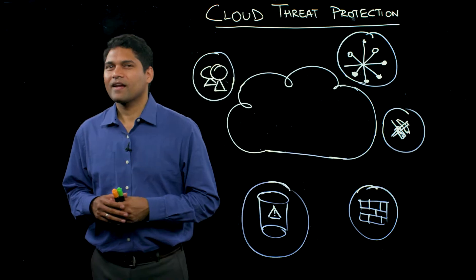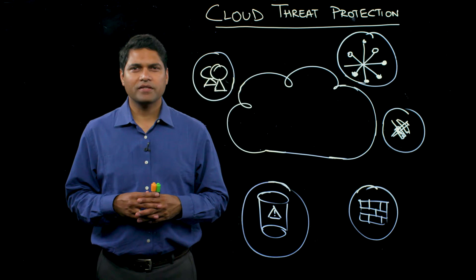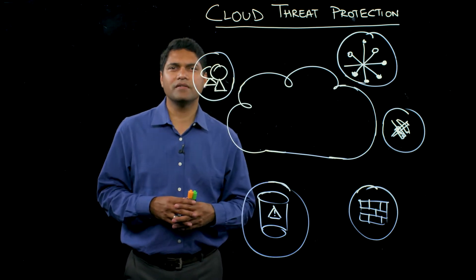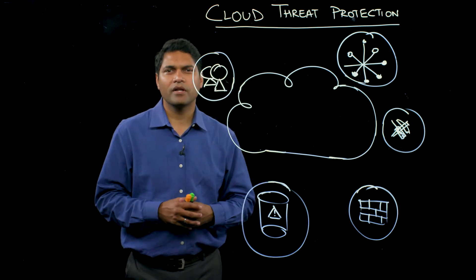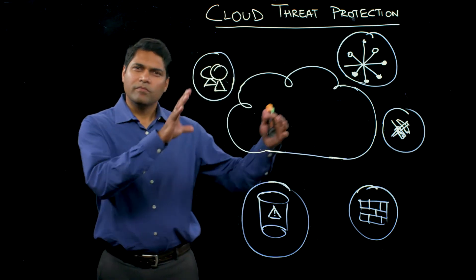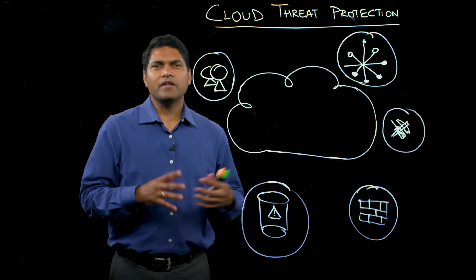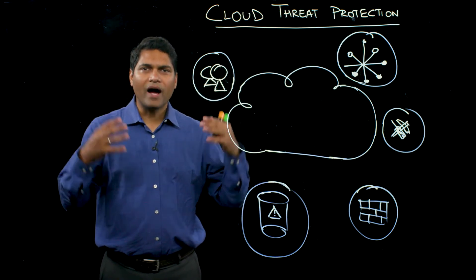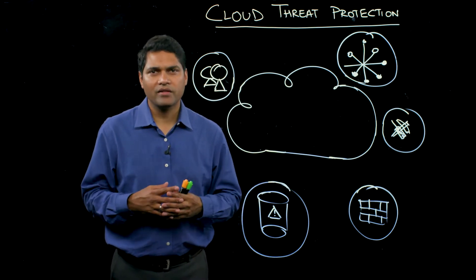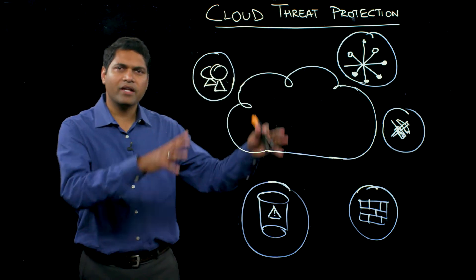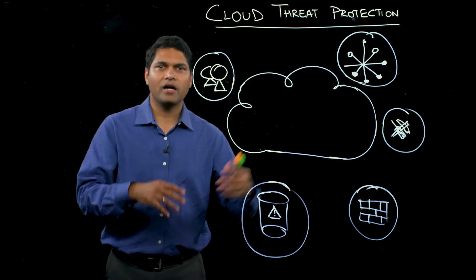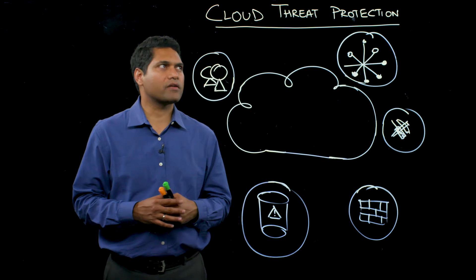Let's dive deeper into cloud threat protection and understand it better. Cloud threat protection is a critical use case for securing your applications and data as they reside in public cloud. Let's take a look at some of the key considerations you need to take into account to actually secure your apps and data. Generally speaking, within the public cloud, there is a lot of disparate data sources which you actually get, and that information needs to be tied together to achieve the right security posture. Let's understand the implications of each one of them and identify how they can be tied together to achieve better cloud threat protection.